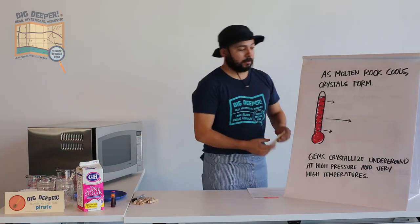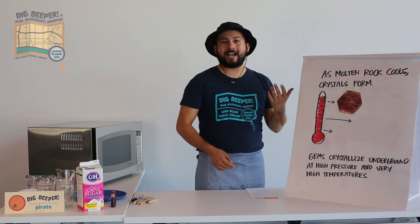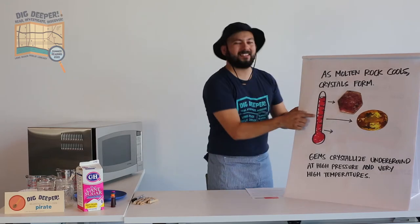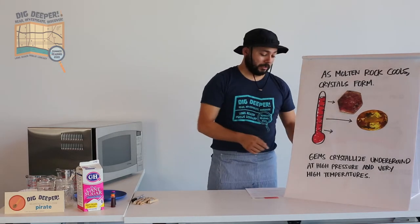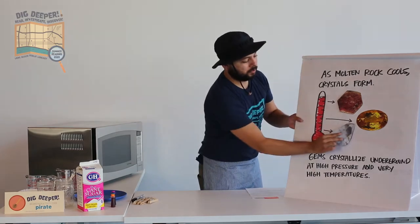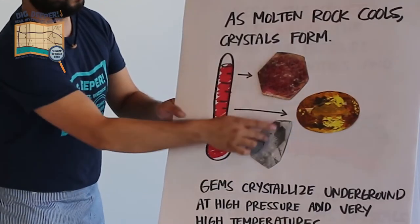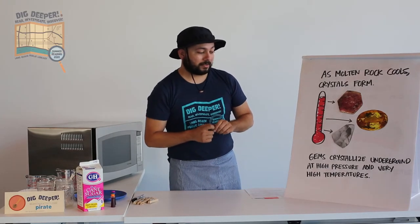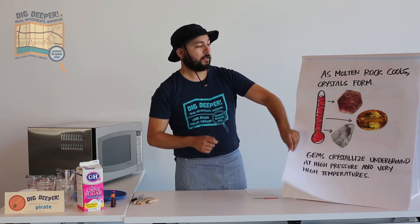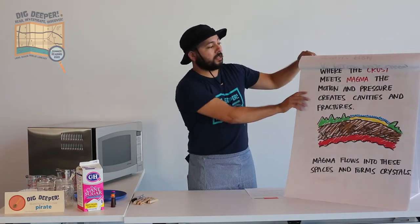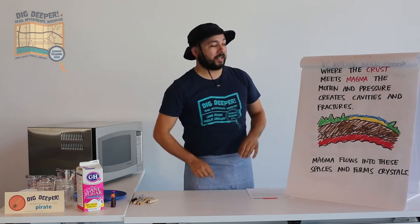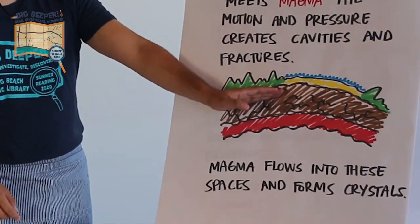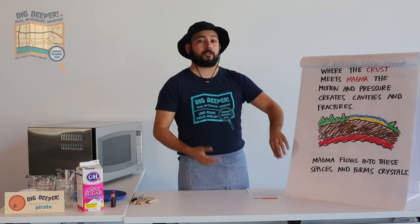At the very highest temperature, corundum will form. In between that, or next to that, we've got topaz, which forms at sort of middle temperatures. And then forming at the very lower temperatures we have quartz. So you can see that different crystals form at different temperatures depending on their own chemical properties. Gems crystallize underground at super high pressure and very high temperatures. Where the crust meets magma, the motion and pressure creates little cavities and fractures in the crust. The magma flows into those cavities and fractures, and then as it cools, begins to form crystals and gems.